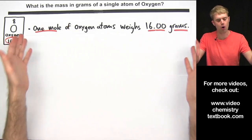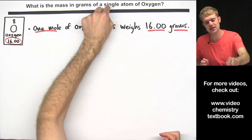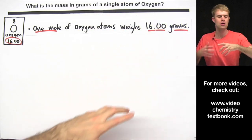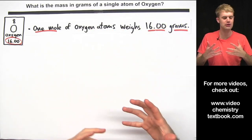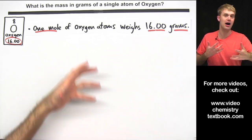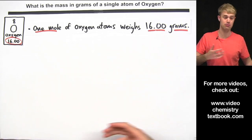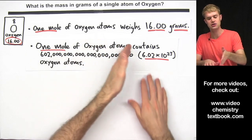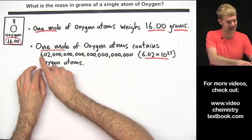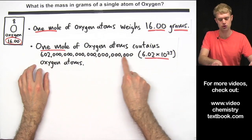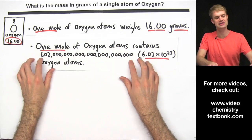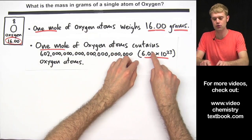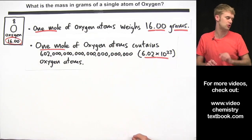But we're not talking about a mole of oxygen atoms — we're talking about a single atom of oxygen, one oxygen atom. So what do we know about the number of oxygen atoms in a mole? One mole of oxygen atoms contains 602 hexillion oxygen atoms, which we often abbreviate as 6.02 times 10 to the 23rd.